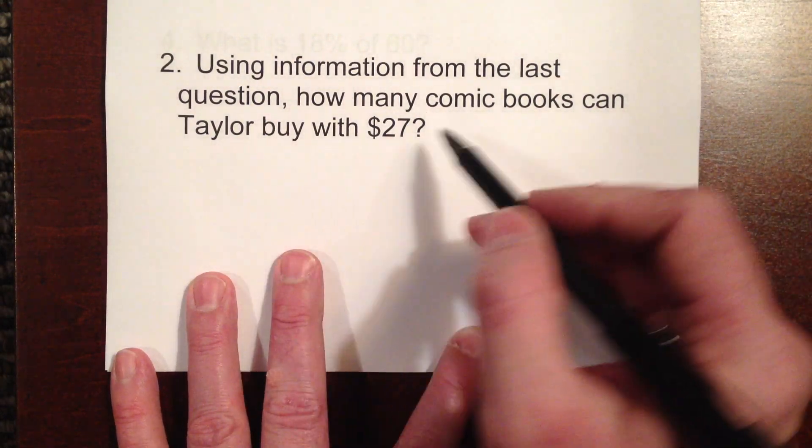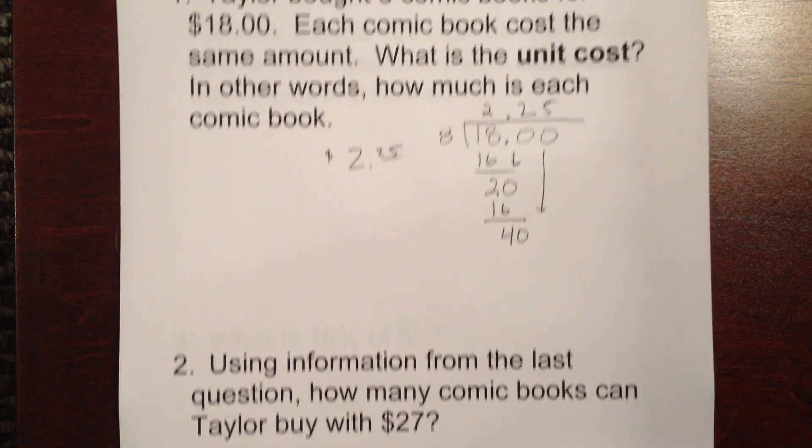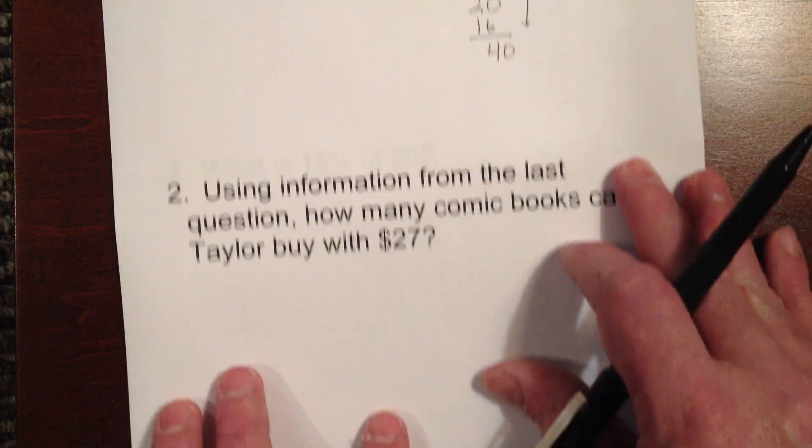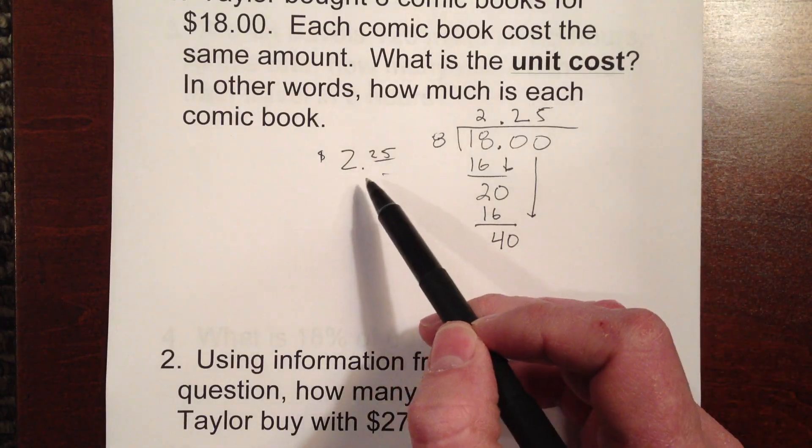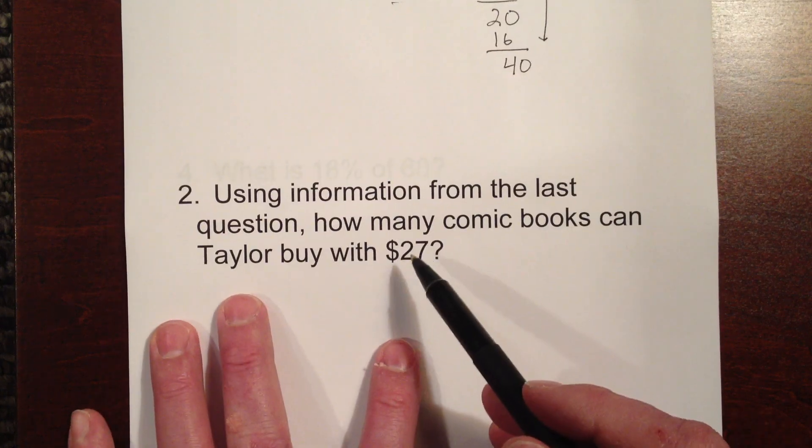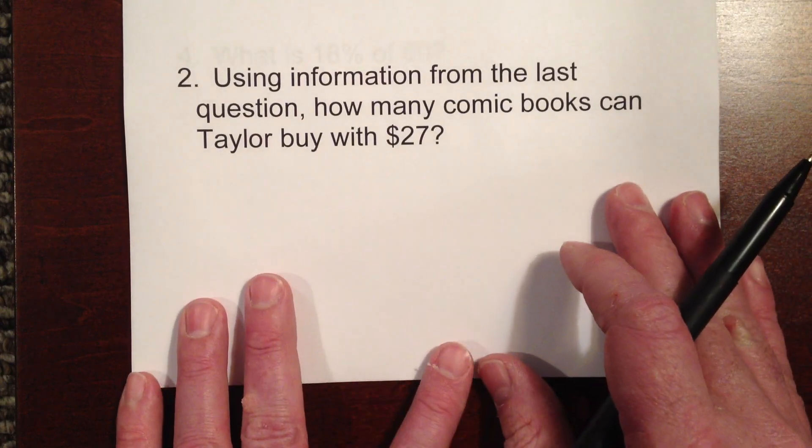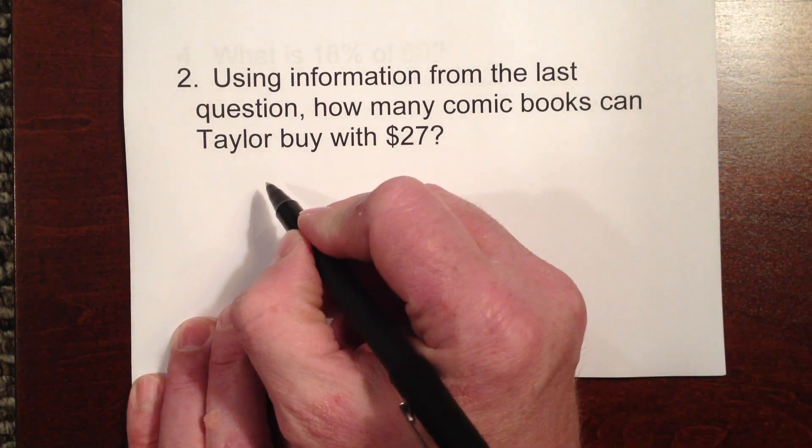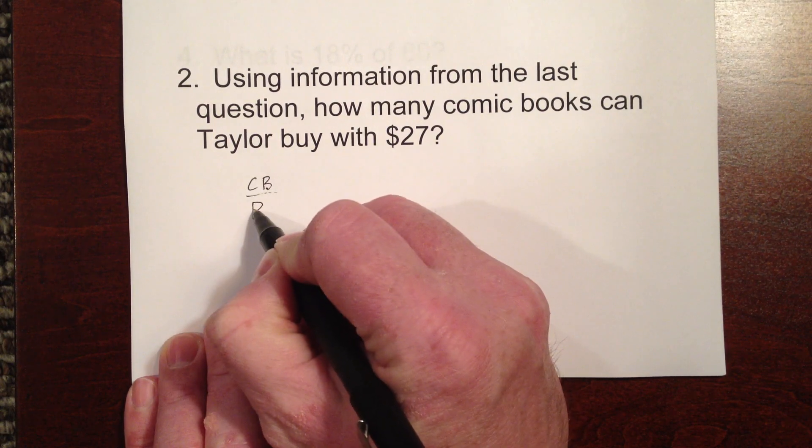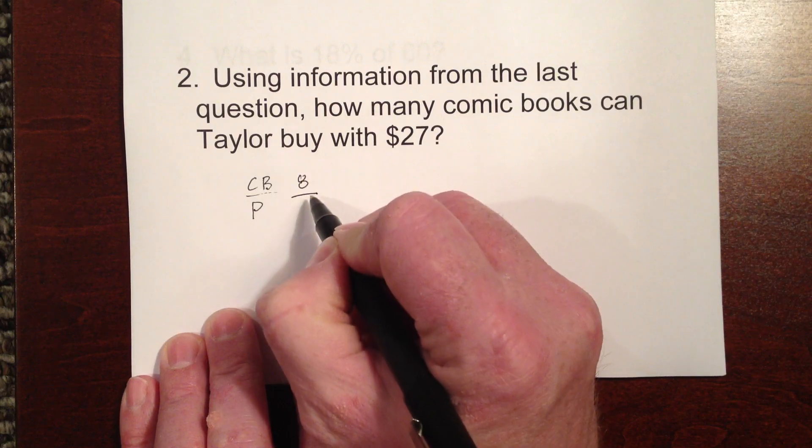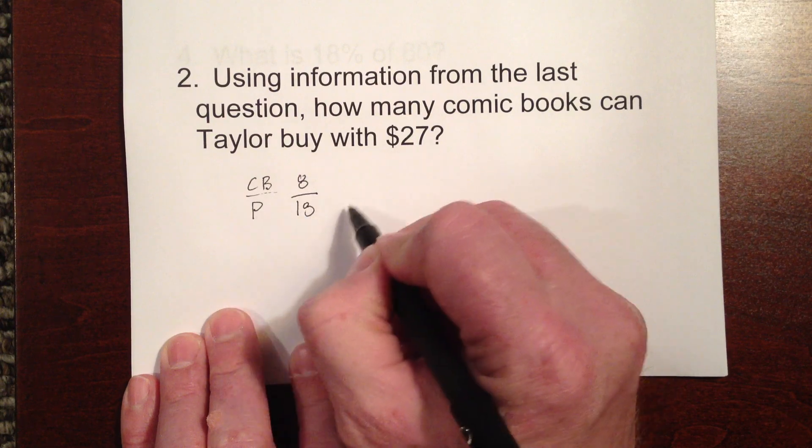Using the information from the last question, how many comic books can Taylor buy for $27? Well, we know that eight comic books will cost us $18. So we can either say the unit price and divide it into the $27. What I want to do is use those rates and proportions like we used last week. And to me it's much easier because we seem to have a pretty good grasp on that. So we can put comic books here and then price.